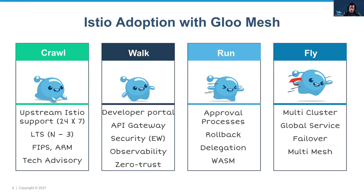Once they get more confidence, they usually go to the run stage, which involves delegating responsibilities to different teams with various objects that allow delegation, and WebAssembly filters to enrich the data plane. Once organizations feel comfortable with that, the next step is really taking full advantage of the service mesh — multi-cluster meshes, federated services that can fail over to each other. With that, I'll hand it off to Shane to give us some of the background on Istio and Envoy filters.